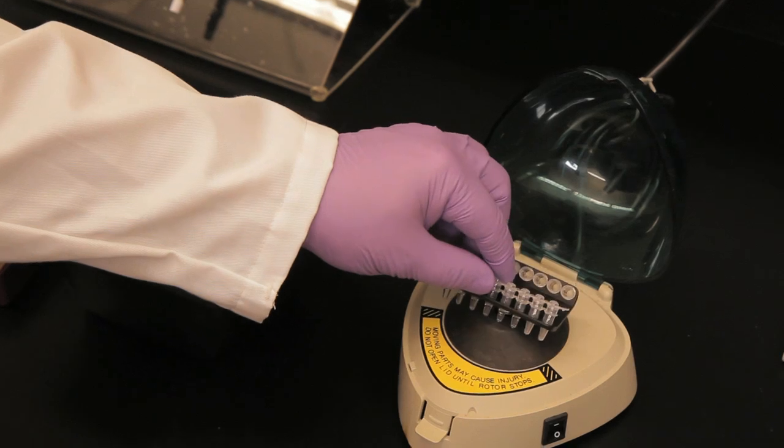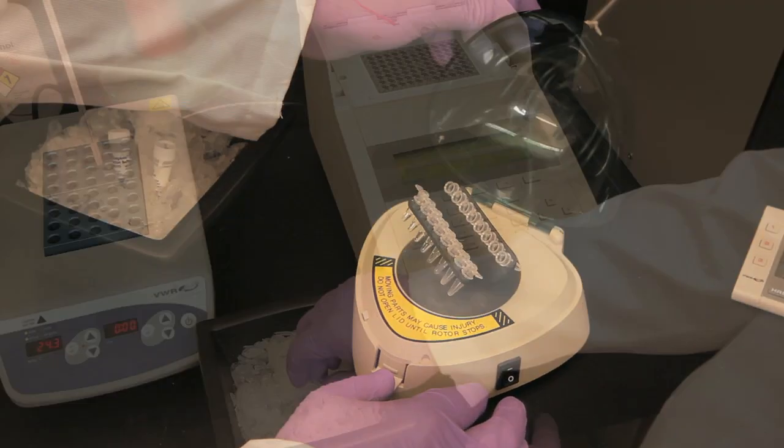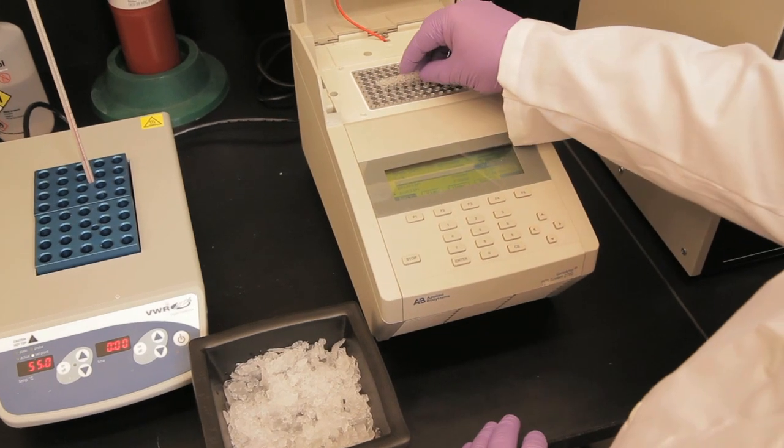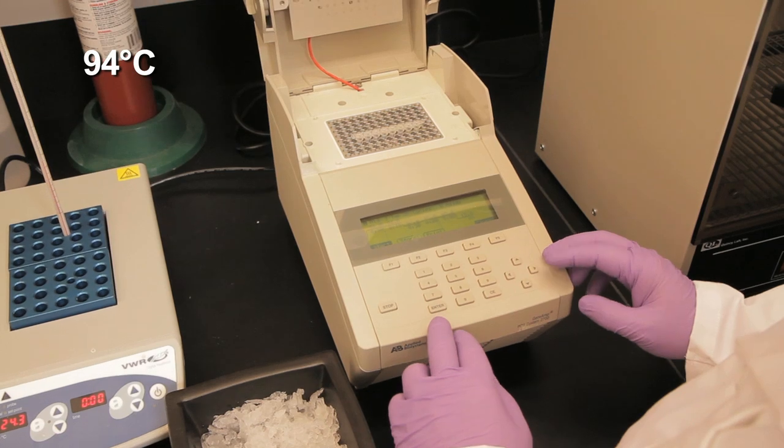If necessary, collect all liquid to the bottom of the tube by a quick spin. Transfer the PCR tubes from ice to a thermocycler with the block preheated to 94 degrees Celsius and start the cycling program.